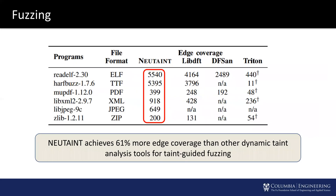We evaluate NeuTaint against three other rule-based dynamic taint analysis tools on taint-guided fuzzing. We measure edge coverage over a 24-hour run on six real-world programs. Each tool generates a set of hotbytes that guide the mutation of a common fuzzer backend. NeuTaint achieves 61 more edges than the other tools.